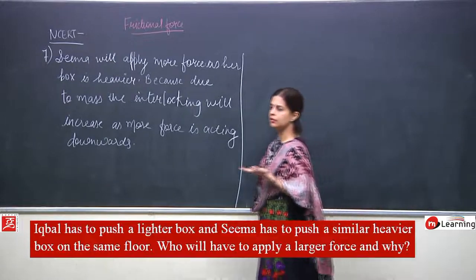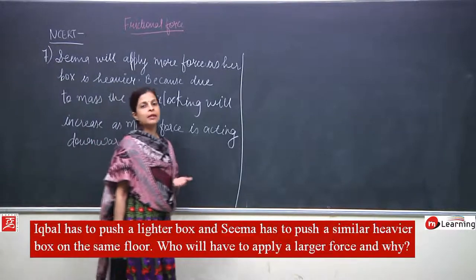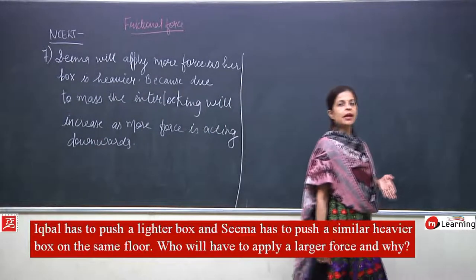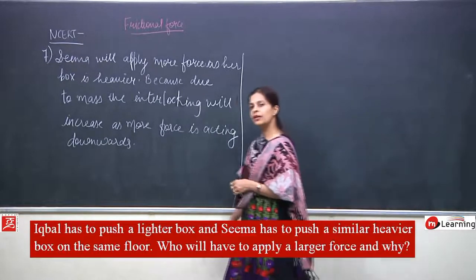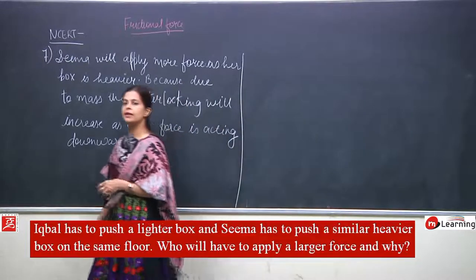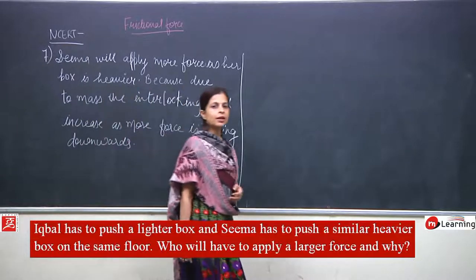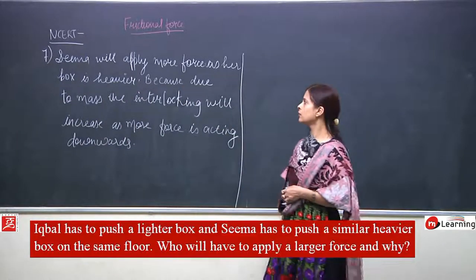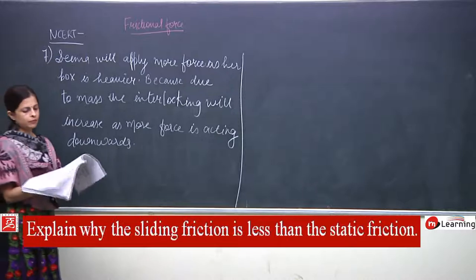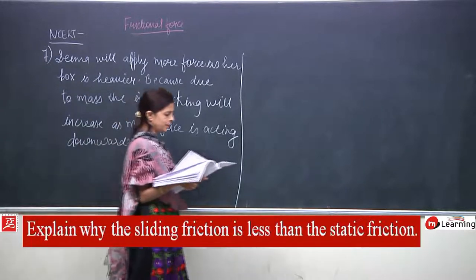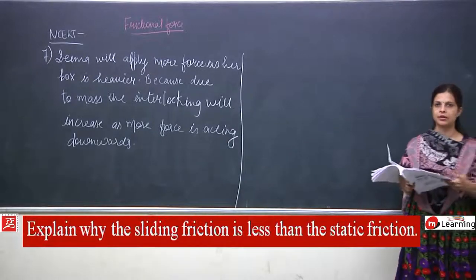Interlocking means the contact between the two surfaces will increase because the mass is there and force is being exerted downwards. When interlocking increases, it will be more difficult to move the box because it is heavy. That was question number 7. Now question number 8: explain why sliding friction is less than static friction.